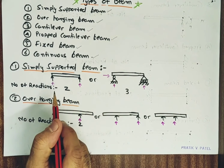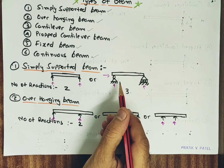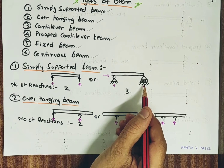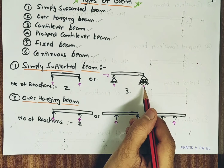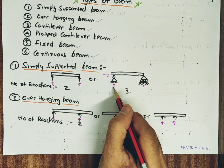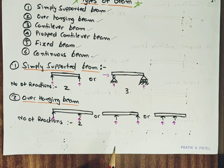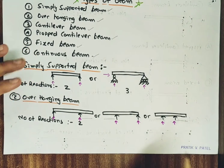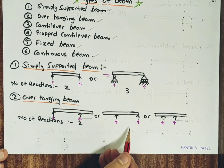A simply supported beam is one supported freely on walls or columns at both ends. It may have 2 vertical reactions, or it may have 1 hinge and 1 roller support — giving 2 or 3 reactions respectively (roller provides 1 vertical; hinge provides 1 horizontal and 1 vertical). An overhanging beam is freely supported at both ends, but one end or both ends are projected beyond the support. The overhanging portions extend past the supports, and the number of reactions is 2, both vertical.